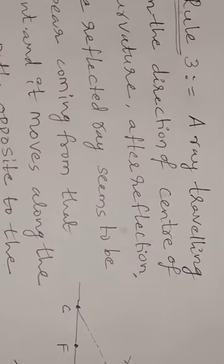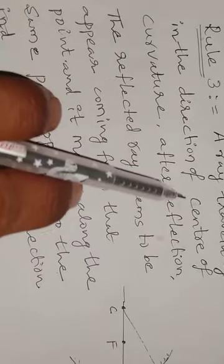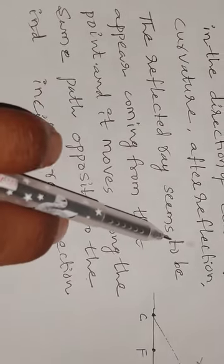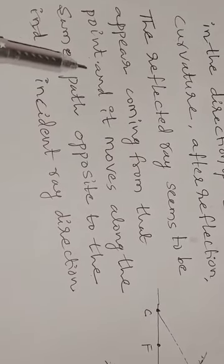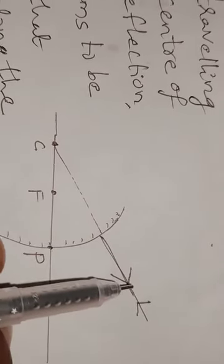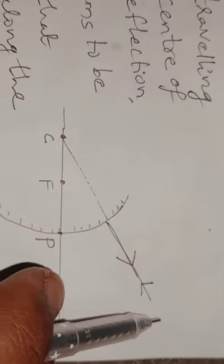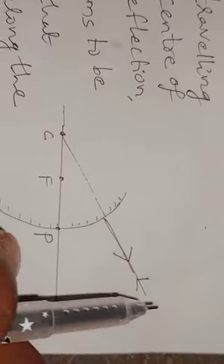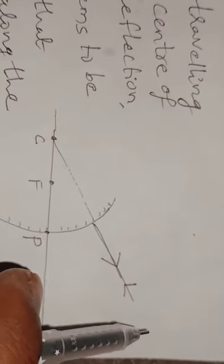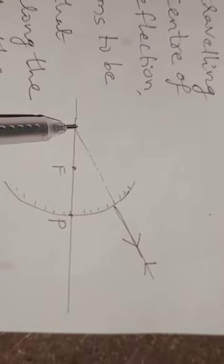Now we discuss Rule 3. A ray traveling in the direction of the center of curvature, after reflection, the reflected ray seems to appear coming from that same point and moves along the same path but opposite to the incident ray direction. The incident ray comes from the object and hits the convex surface. After reflection, it moves along the same path opposite to the incident ray.